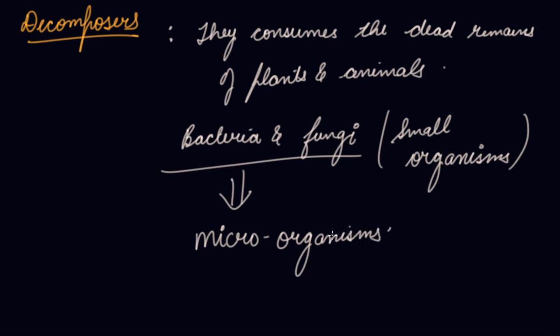So this is all about the biotic components and their interactions. Living beings are divided into three parts: producers, consumers, and decomposers. I hope you have understood this. Do download our Scholars Learning app and enjoy the learning experience with us.